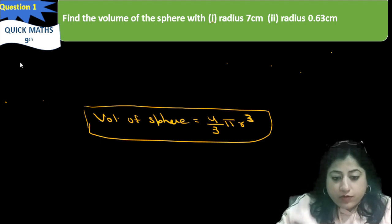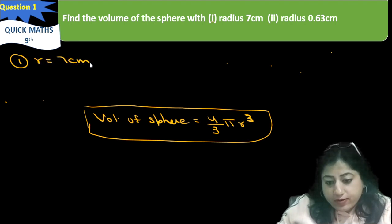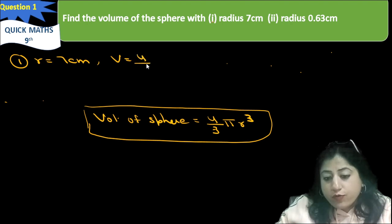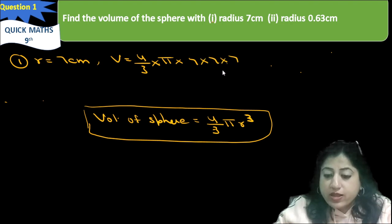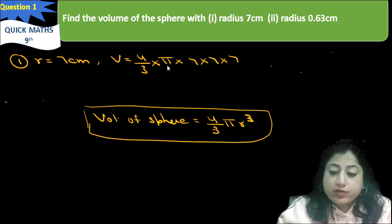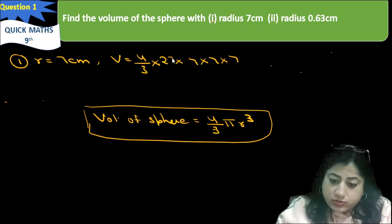First, the radius is 7 centimeters. So the volume will become 4 by 3 into pi into r cube. R cube means 7 into 7 into 7. Putting the value of pi as 22 by 7, we get 4 by 3 into 22 by 7 into 7 cube.